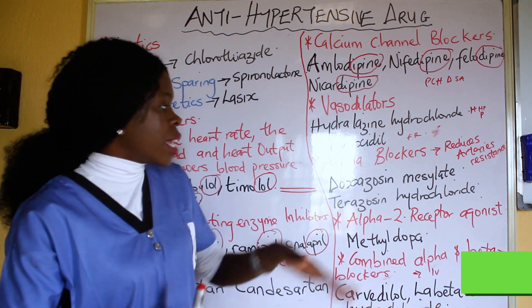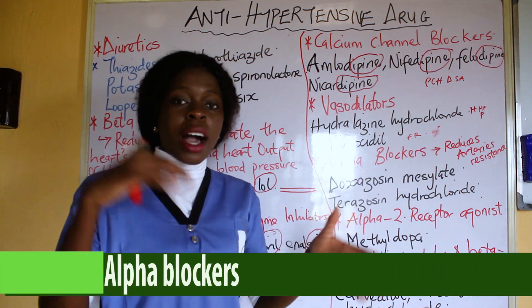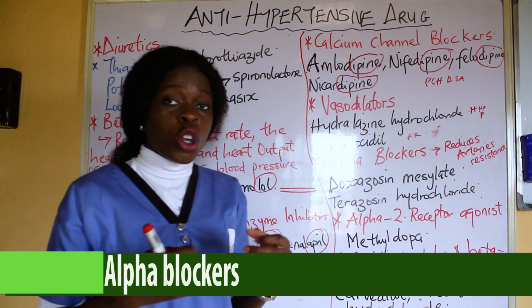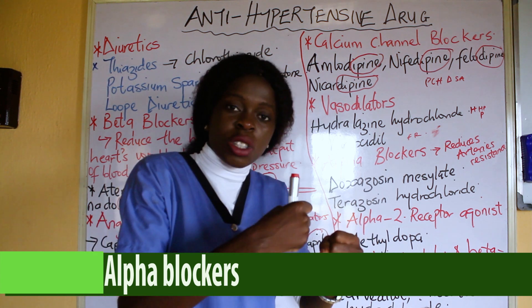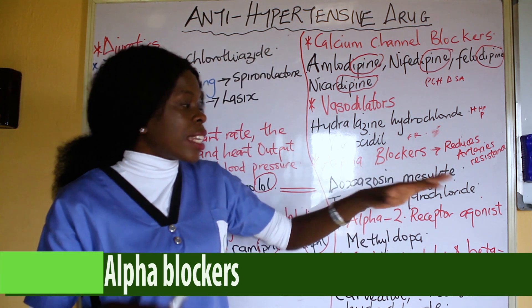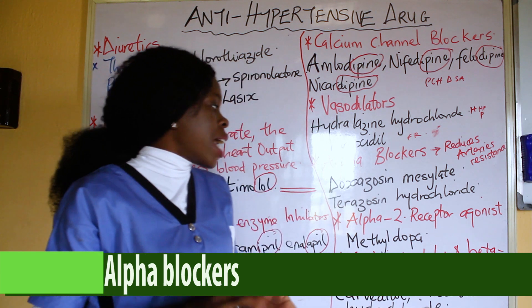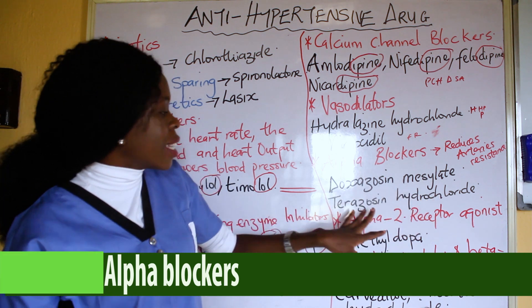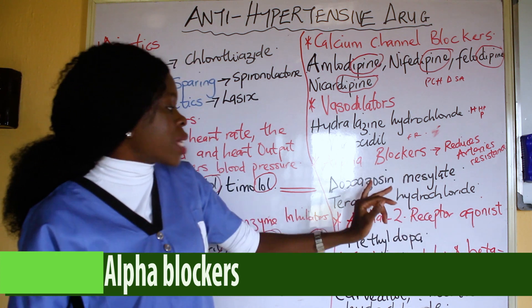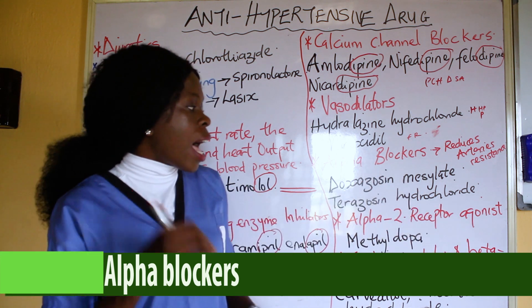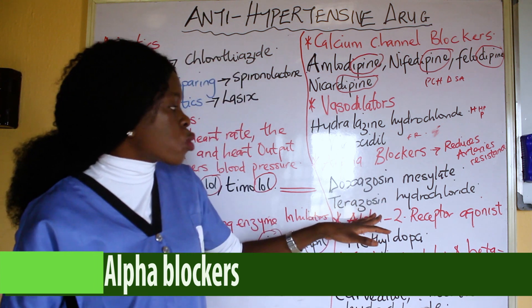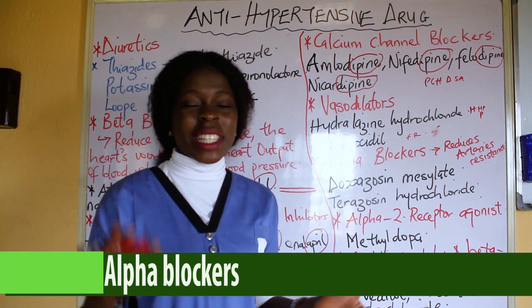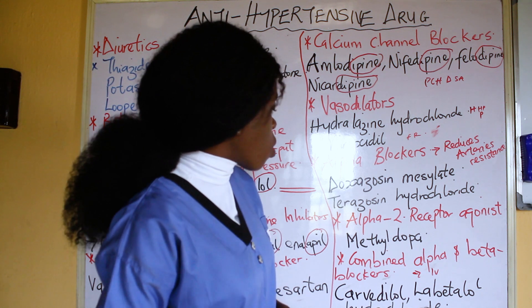Another class of drug is the alpha blockers. Alpha blockers reduce artery resistance — when blood is flowing through the arteries, there is resistance, and what these alpha blockers do is reduce that artery resistance. Examples of alpha blockers are doxazosin mesylate and terazosin hydrochloride. Side effects associated with alpha blockers are fast heart rate and dizziness.